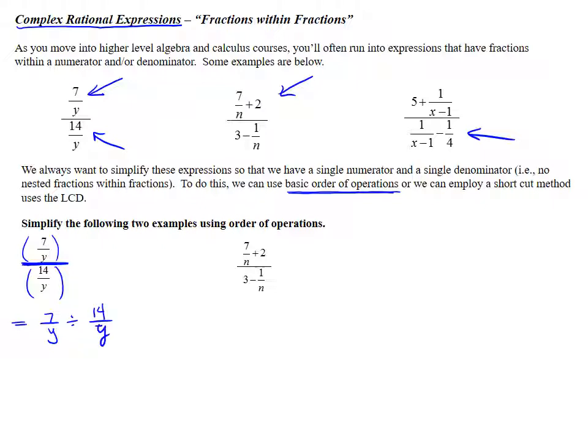So this is really 7 over y divided by 14 over y. We know that when we divide fractions, we flip and multiply the second fraction. So this would be 7 over y times y over 14.